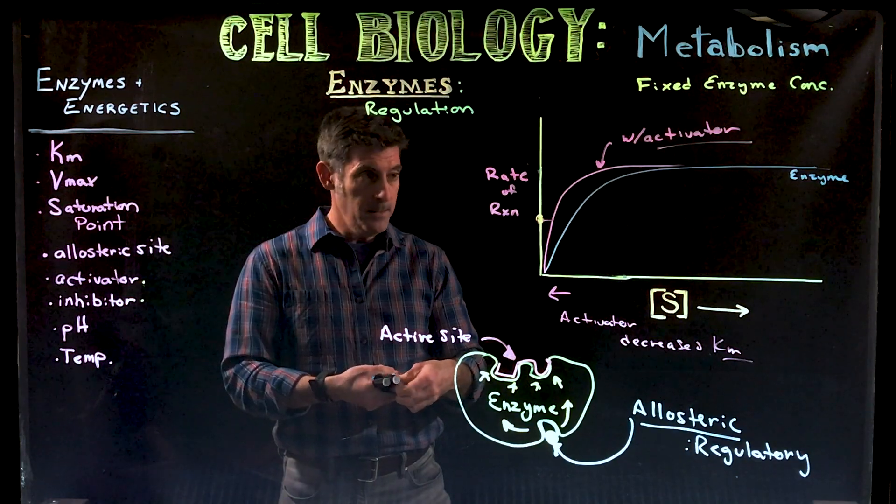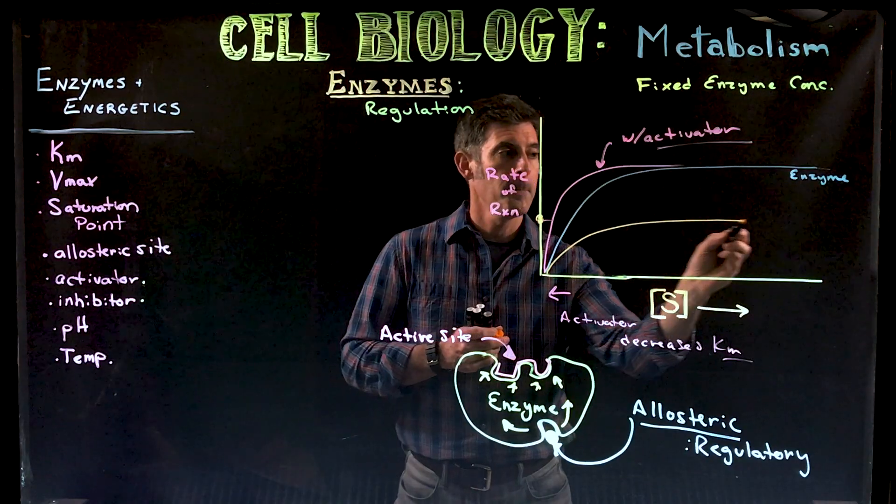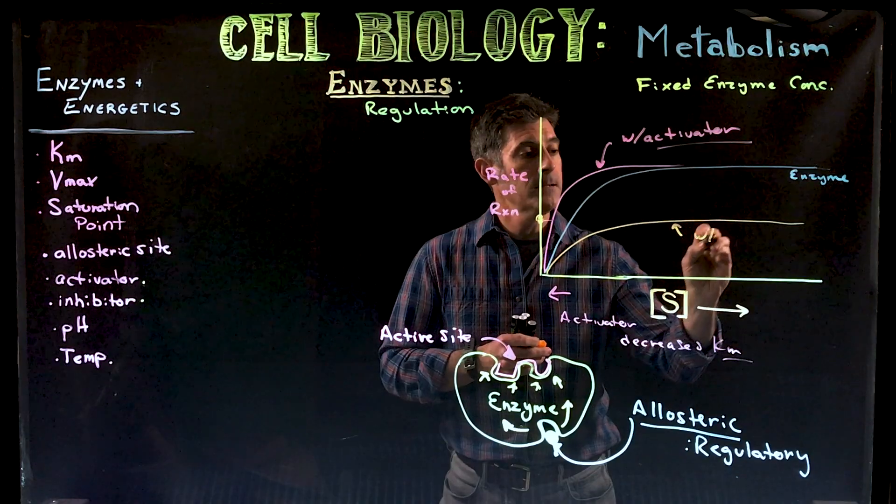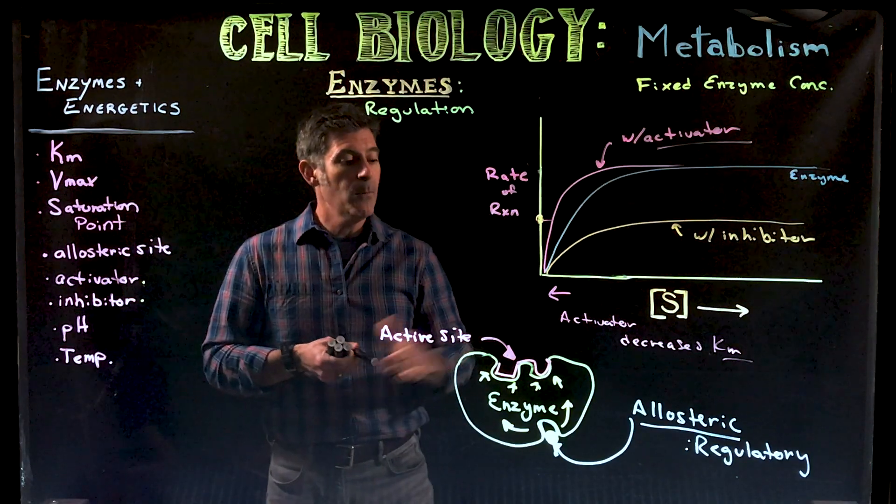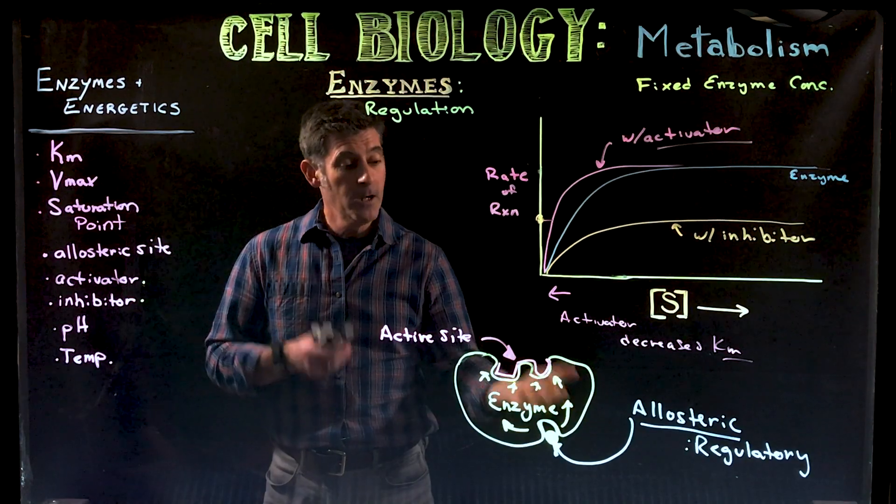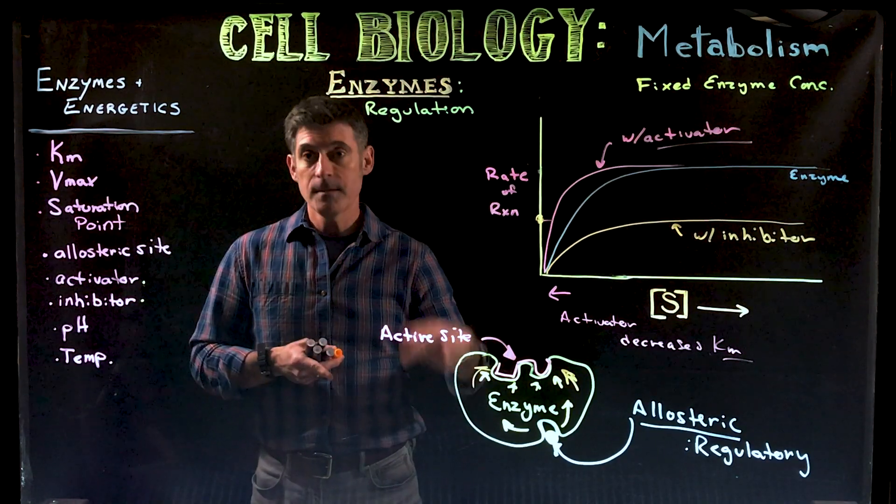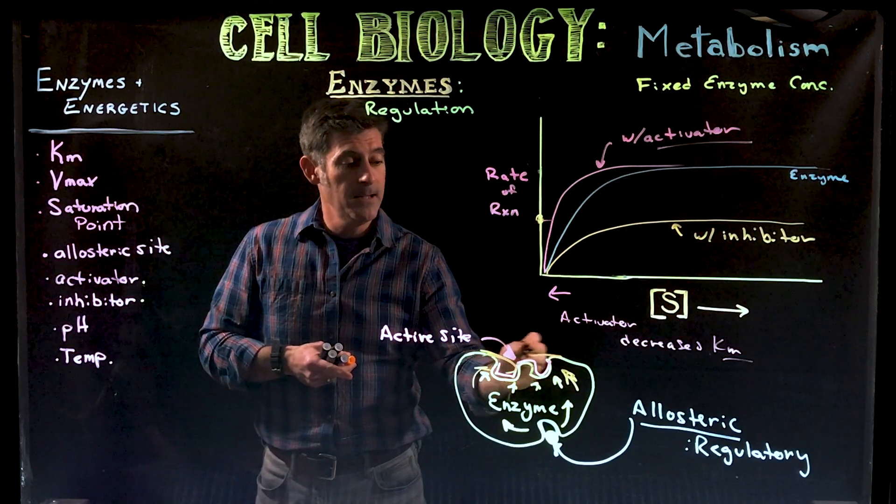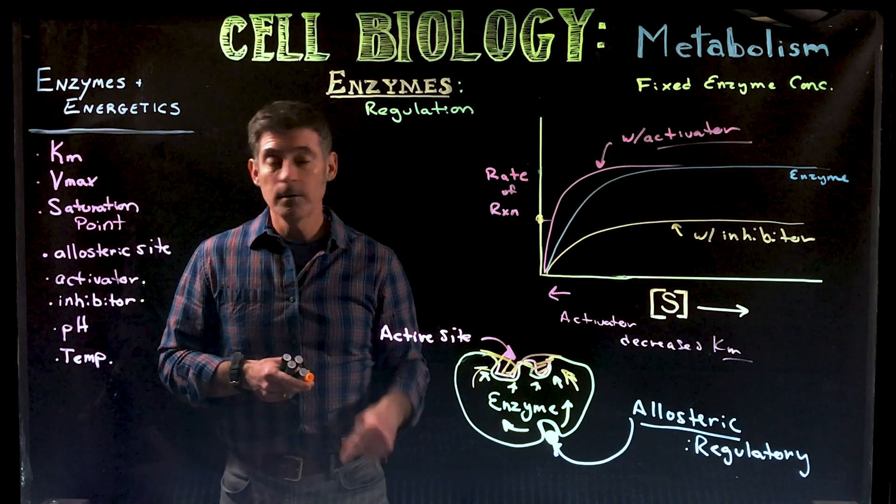You can also see a circumstance where we see something like this, a different curve. This is with an inhibitor. So now when this allosteric molecule, the molecule binding to the site, is called an allosteric inhibitor, what will happen is it will change the shape of the enzyme in a way that instead of helping the enzyme bind to the substrate it almost shuts down the active site itself. It's as if the active site has been blocked because the shape has been changed.